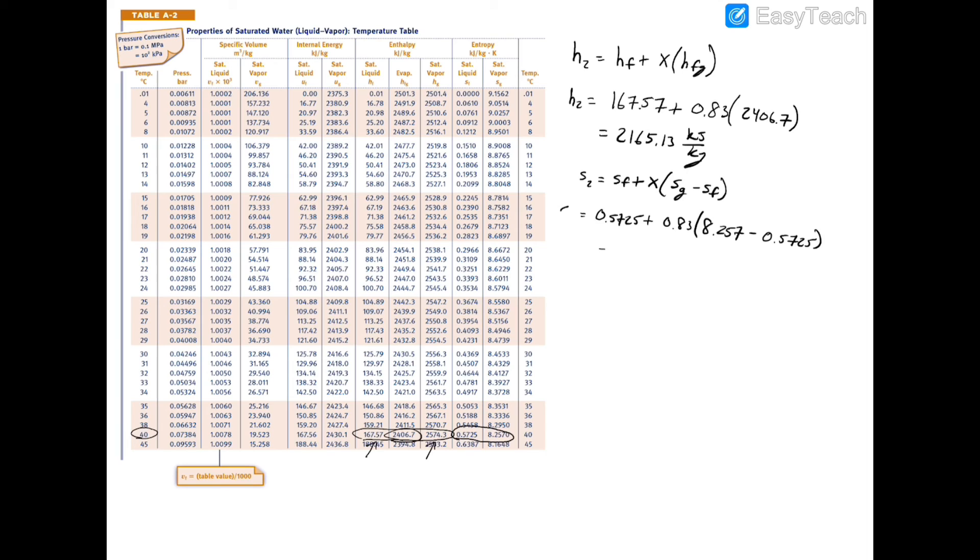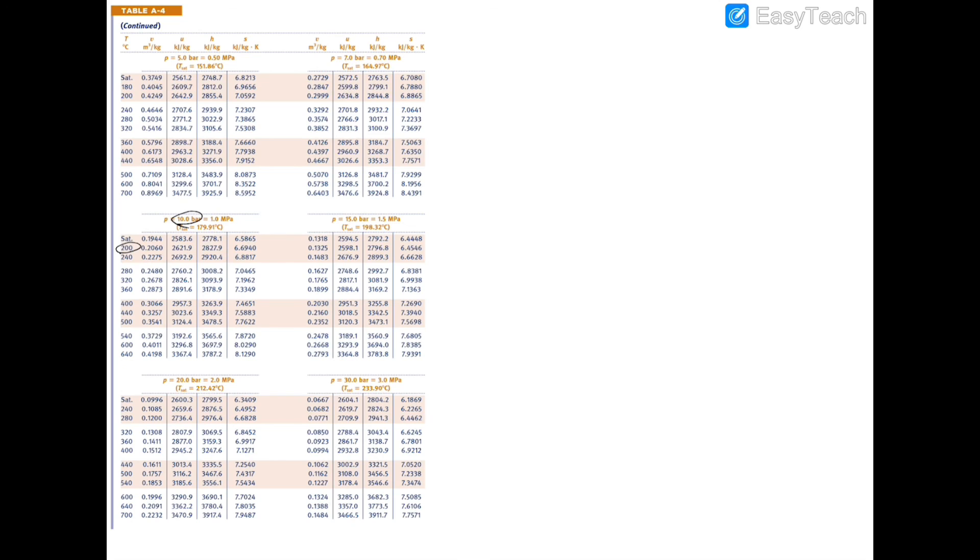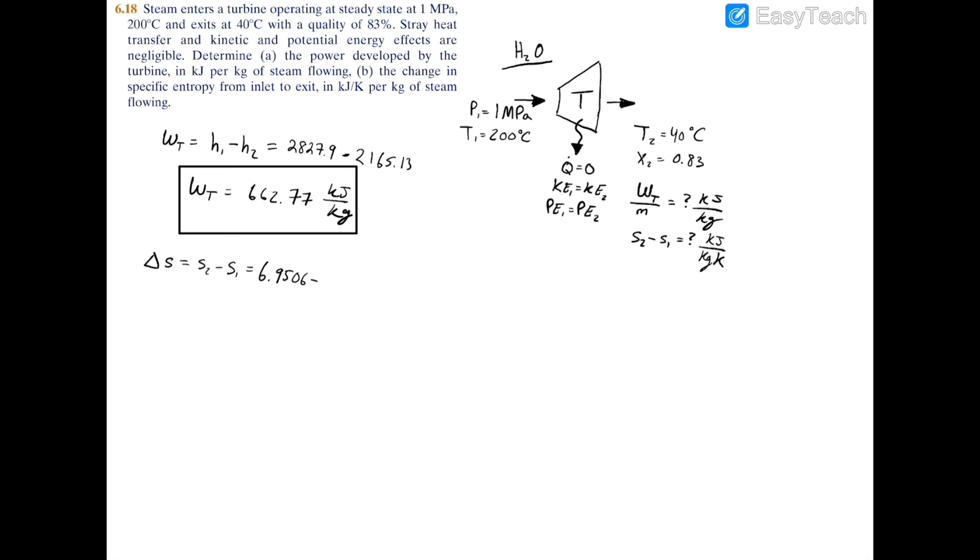Now we just need to find s1, which is again in the superheated table at 10 bar and 200 celsius. If you go over there it's pretty simple, it's right over here: we have 6.6940 kilojoules per kilogram kelvin.